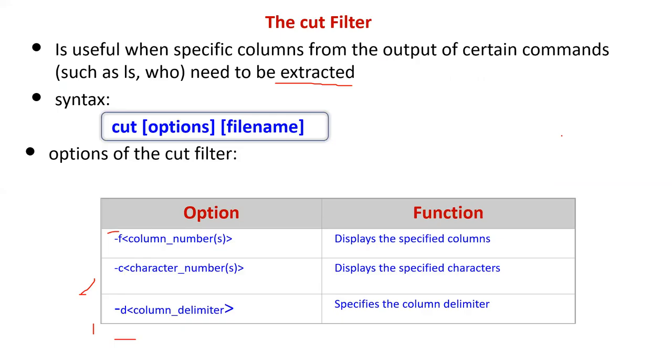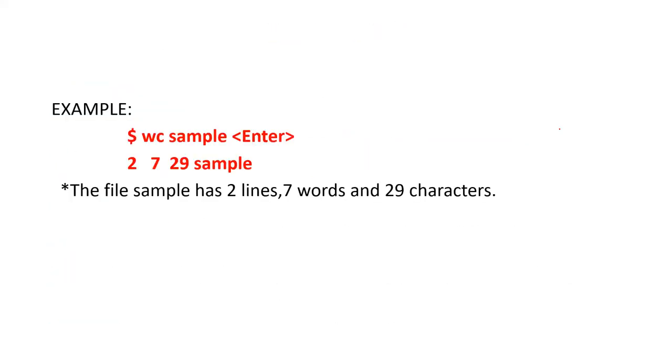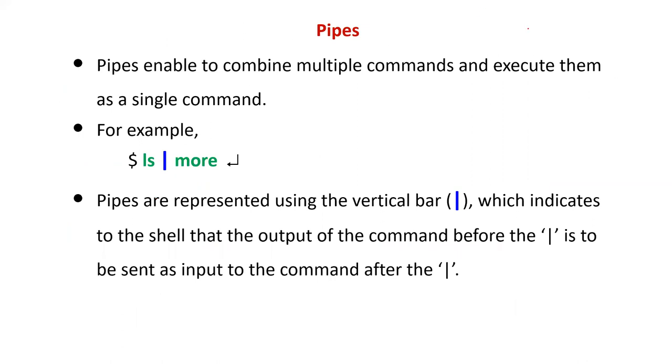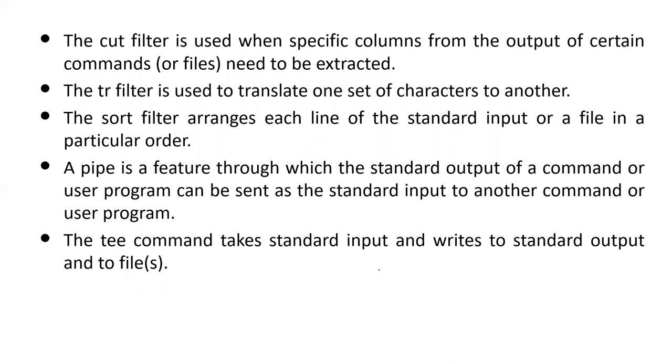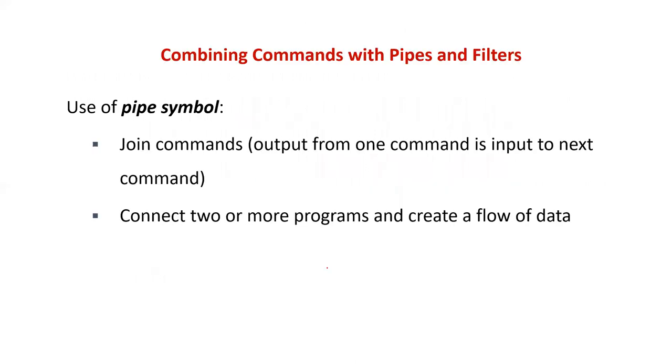These are the various filters available: grep filter, wc, cut, and tr. The pipe symbol enables you to combine multiple commands and execute them as a single command. Instead of multiple separate commands, you create one single command. As I already said at the start of the class, the vertical bar represents a pipe. Here's an example: the ls command gives standard output to command 2, which takes the input from command 1. This is the pipe's nature.